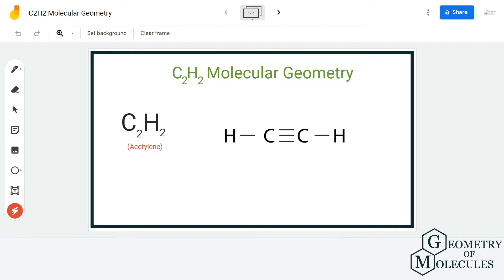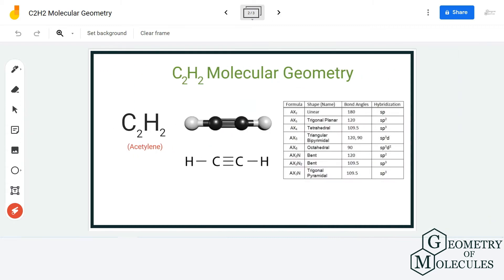According to the arrangement and according to the shape, we can say that this molecule has a linear molecular geometry because all the atoms are attached in a straight line.